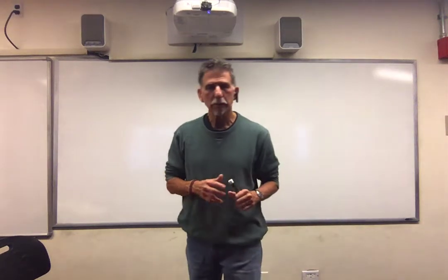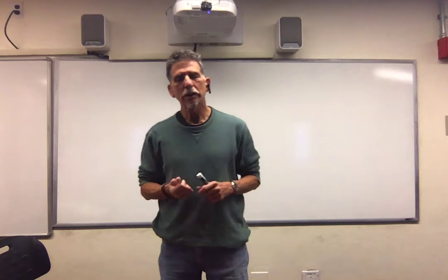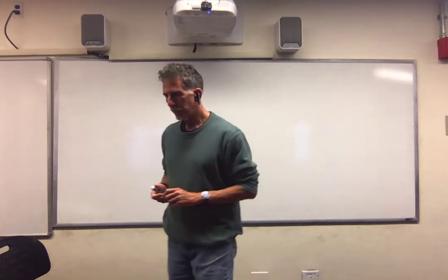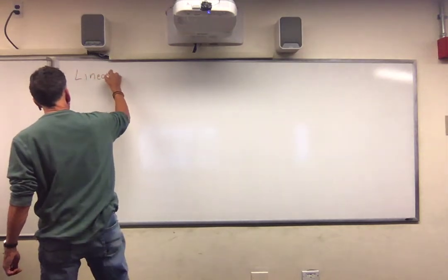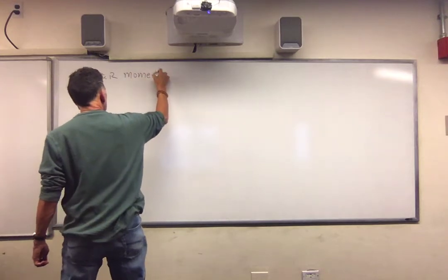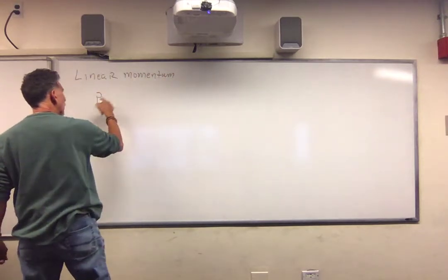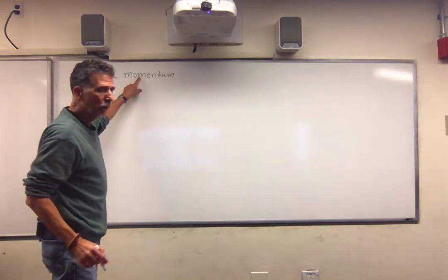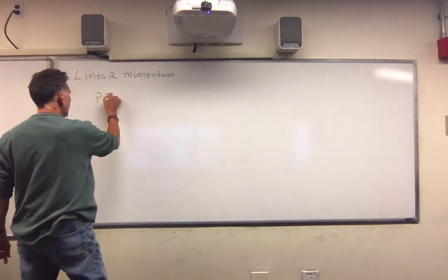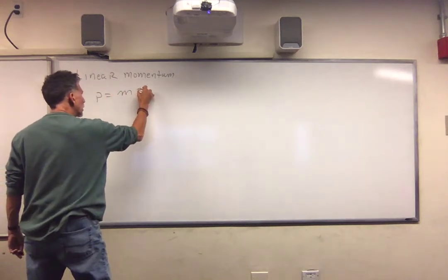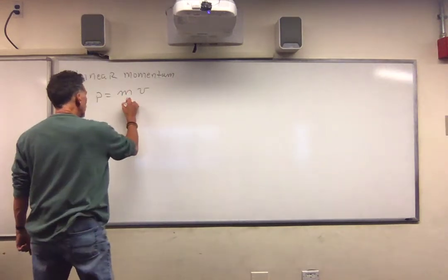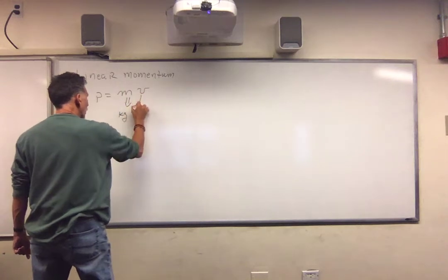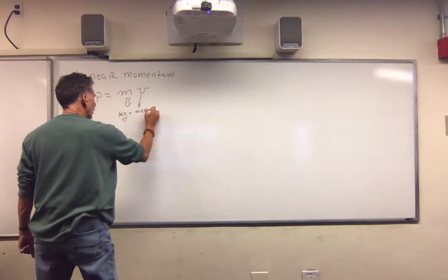Welcome to lecture 11. Here we'll just continue our discussion of momentum. We defined linear momentum — we use the symbol p because we don't want to use m, since m looks like mass. It's simply the mass times the speed. When we discuss vectors, you'll see it's really the mass times the velocity. The units of momentum are kilograms times meters per second, and there's no special unit for that.